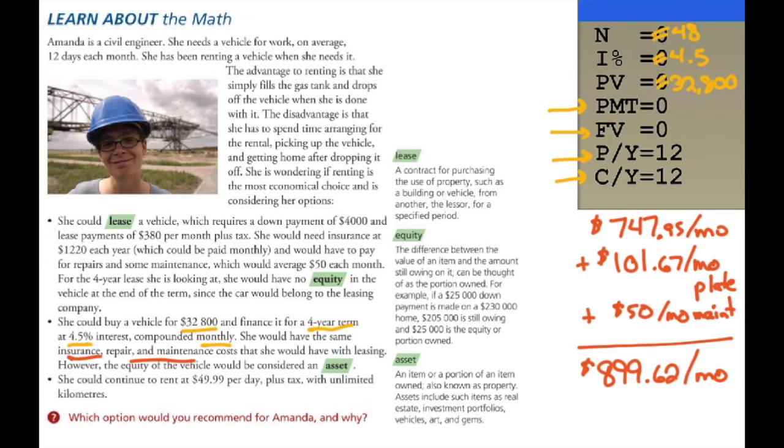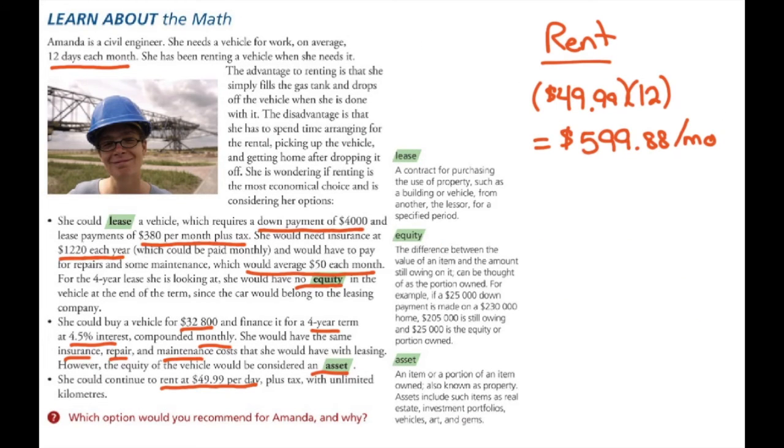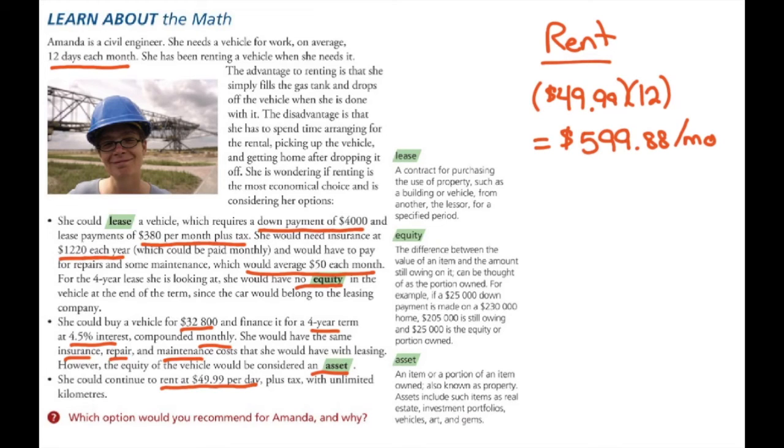So as we can see, buying the car is by far the most expensive, almost $900 a month. The lease, $530, and the rental about $600. If we're going based on just cost, the monthly cost of the lease is the cheapest. However, the downside to it is the $4,000 that she would have to have as a down payment. Second cheapest would be to rent. It also has some inconveniences with it, having to go pick up the car and get back home after dropping it off.